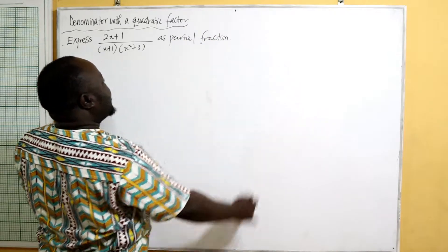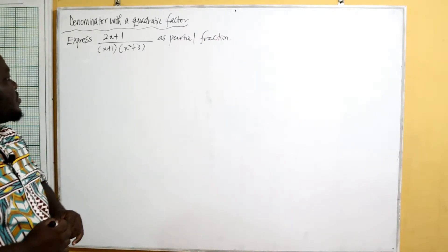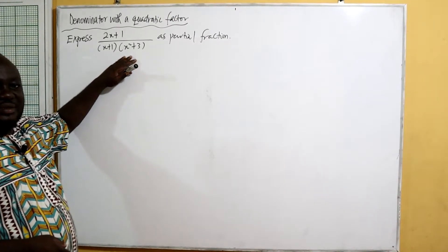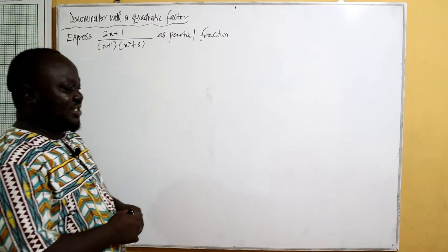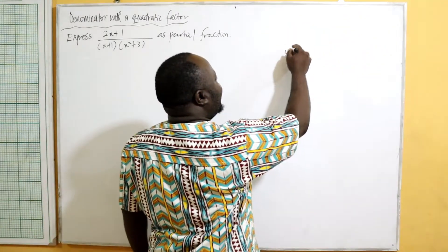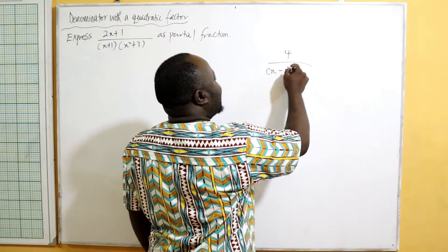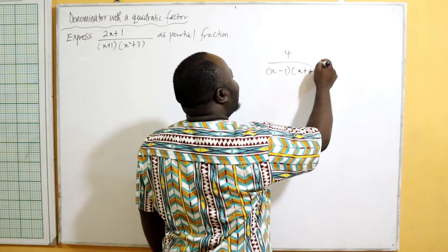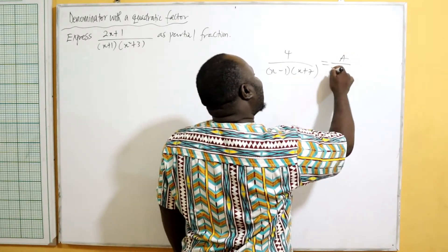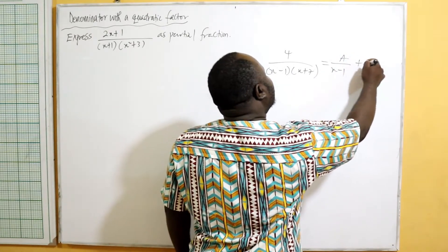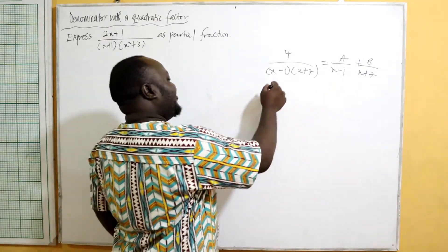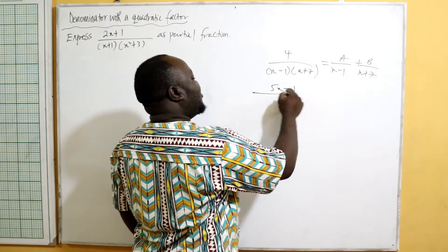This is one linear and one quadratic. For the linear ones, we learned in our previous lesson that if you are given, say, four over x minus one times x plus seven — because both are linear — you can write this as a over x minus one plus b over x plus seven. Now when it is quadratic, say you have five x minus one over x squared plus five times x minus one...